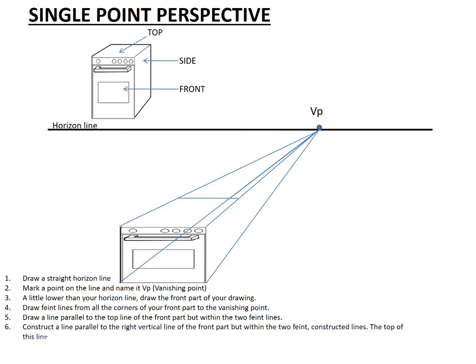Our step number six says construct a line parallel to the right vertical line of the front part, but within the two faint lines or faint constructed lines that were projected from that particular side. So, the top of this line should join the line constructed in number five.